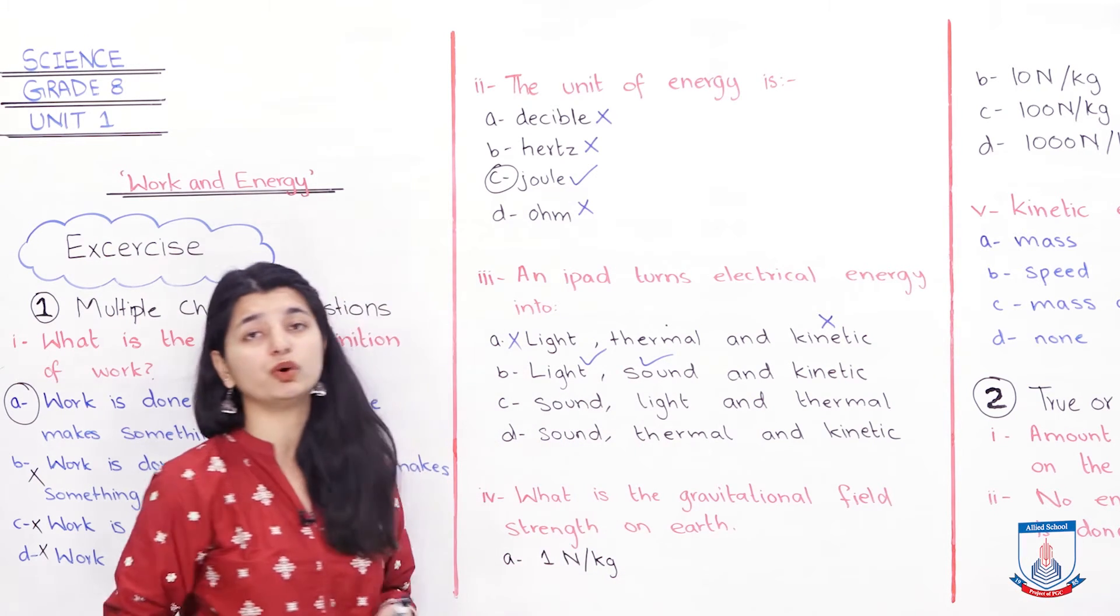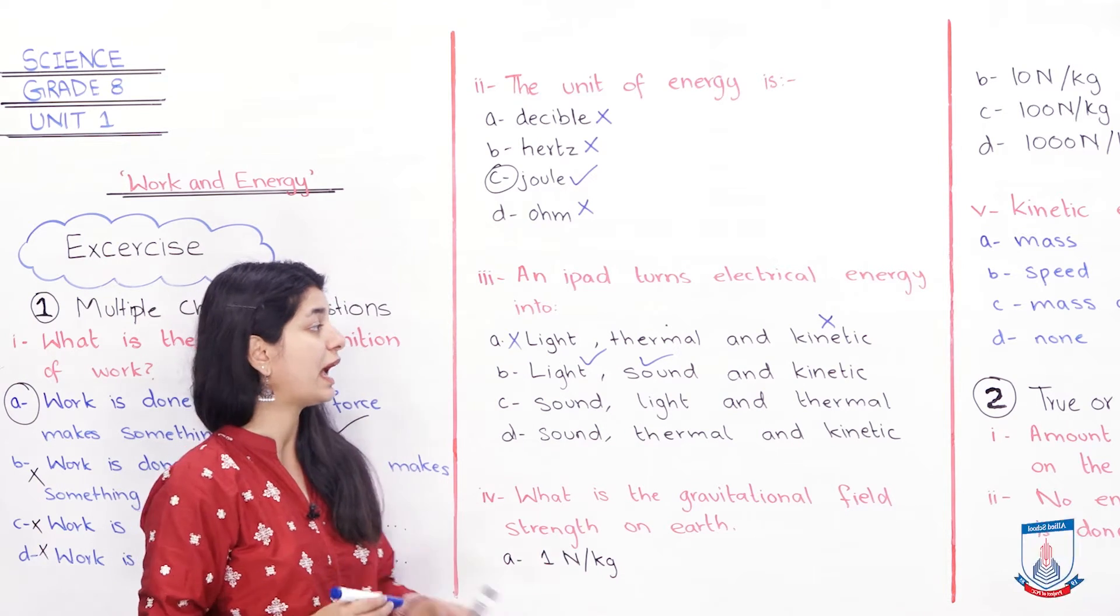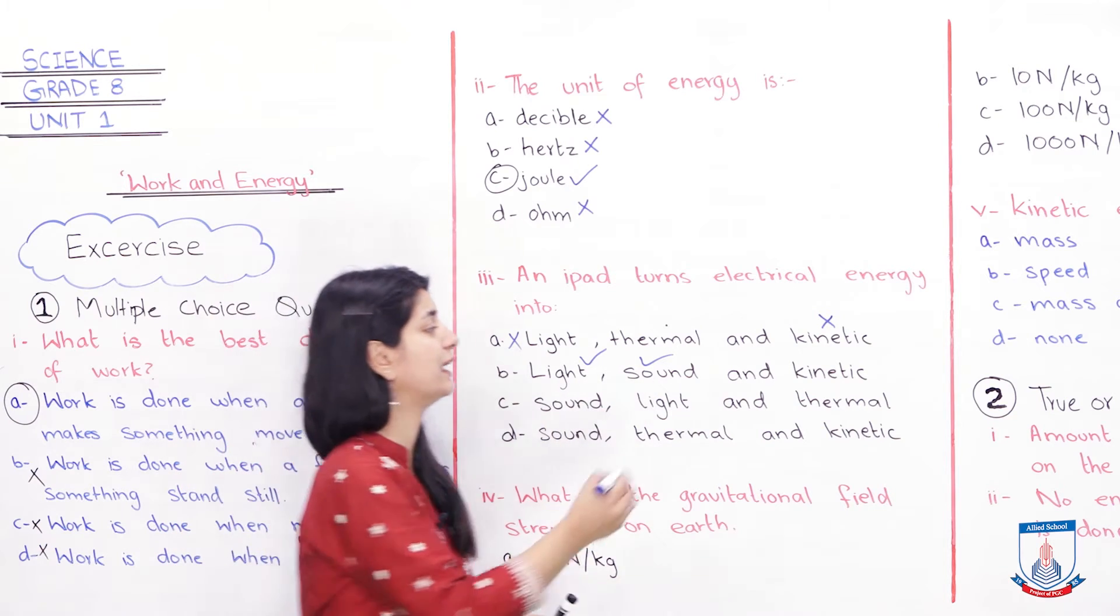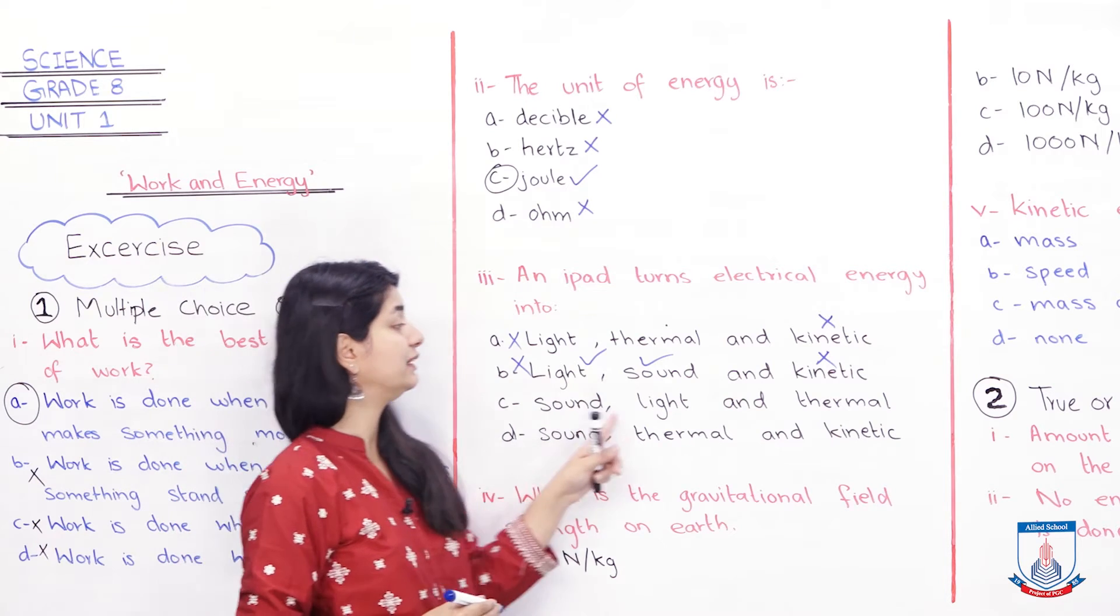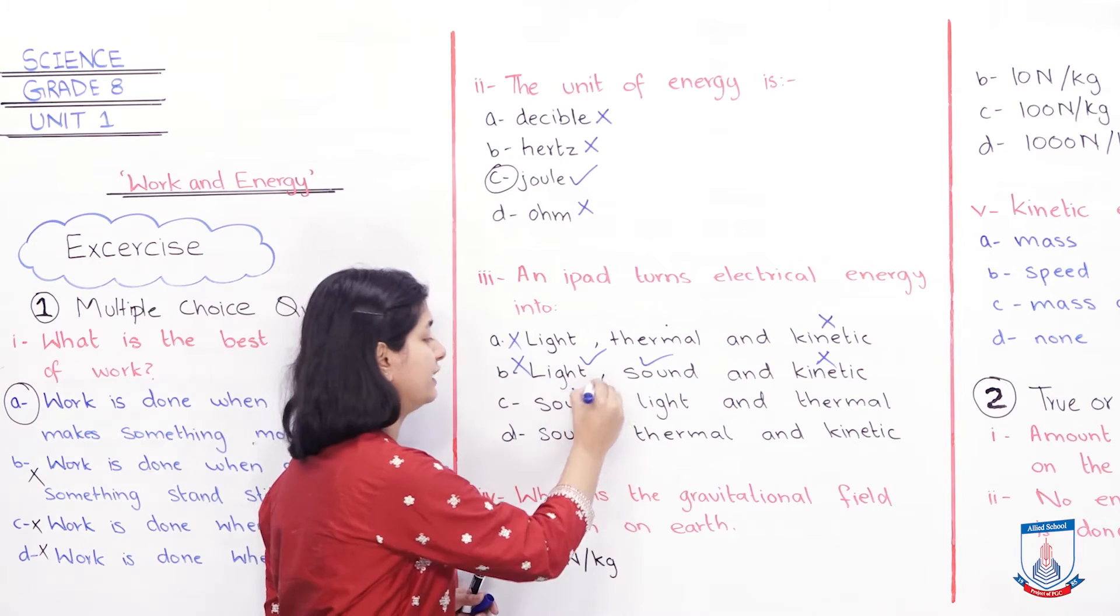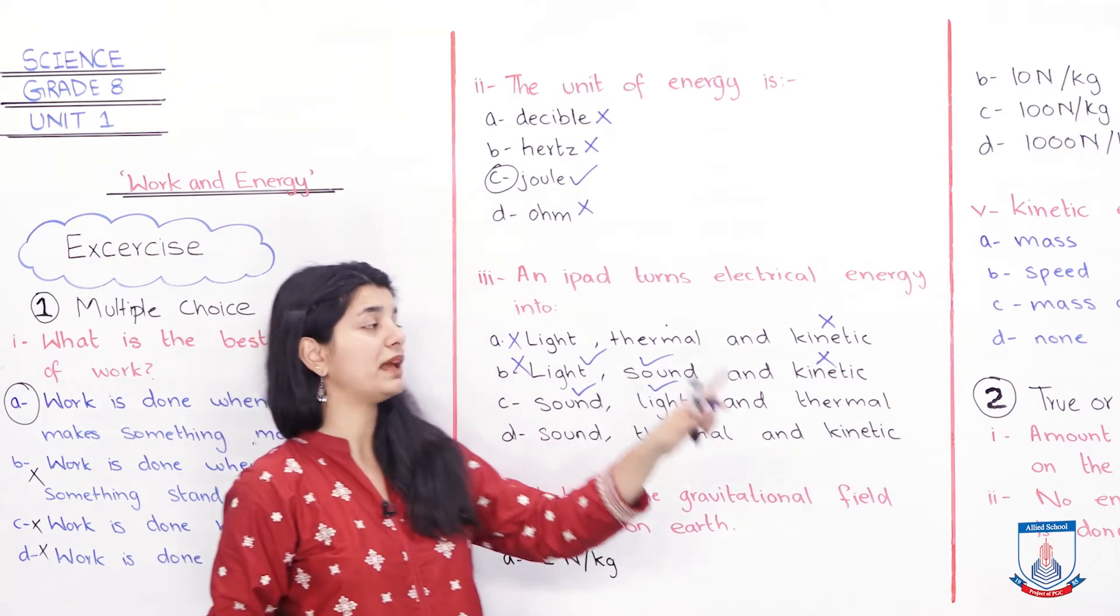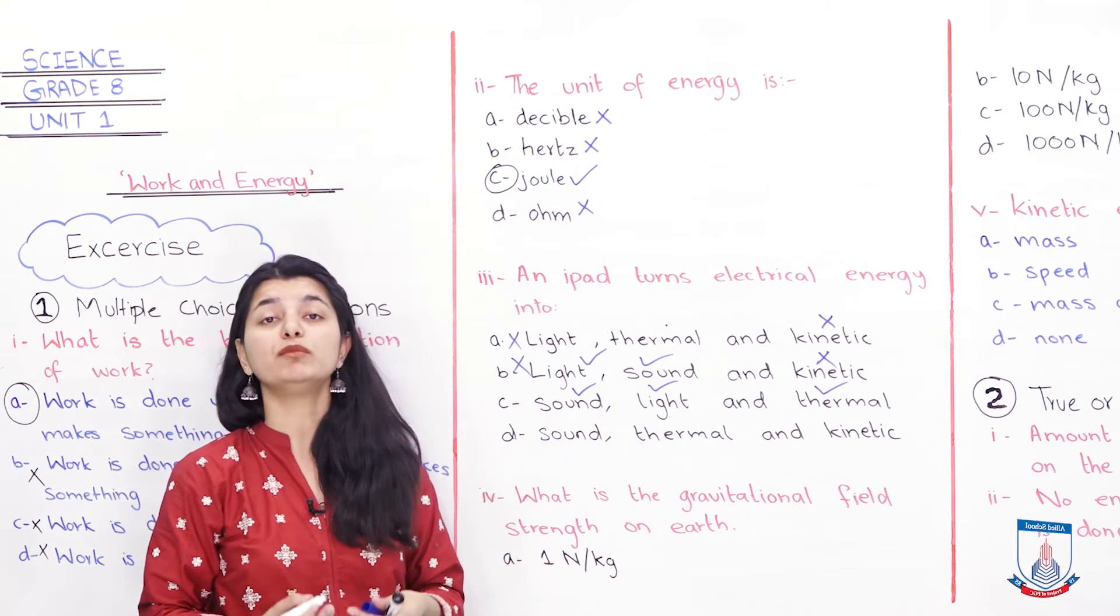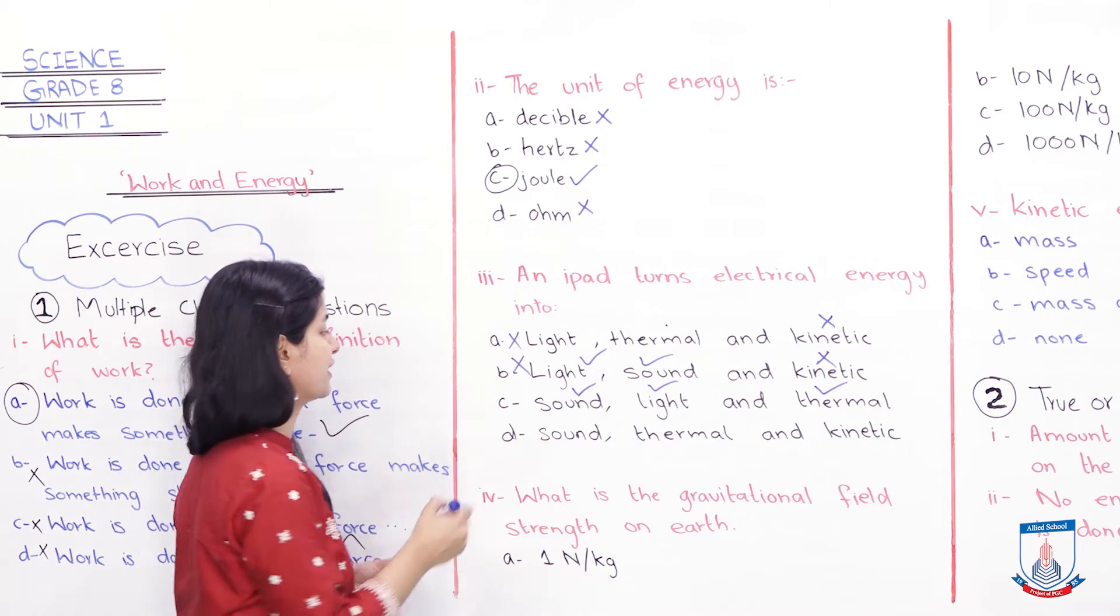And then kinetic came. So these two were right again, but because of kinetic, this option also cancelled. So B is not. Sound, light and thermal energy. Now we say that sound energy comes out. Light energy also comes out. And thermal energy, we discussed in the first part, that yes, it exists. Why? Because it is warm. Because the heat energy is exposed off. So option C seems correct.